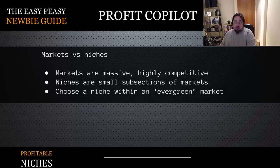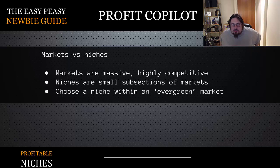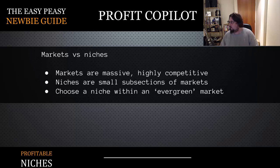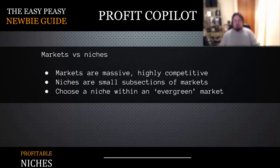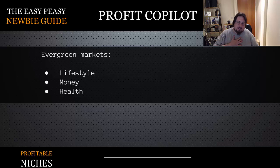A good example could be if you're in the weight loss niche — something like 'weight loss for a wedding.' This is a very profitable sub-niche or micro-niche. We want to sell all year round, so we don't want to be restricted by seasonal sales. Our market wants to be evergreen, and we don't want to be caught up in trends. Generally, our main money websites really want to be in evergreen niches.